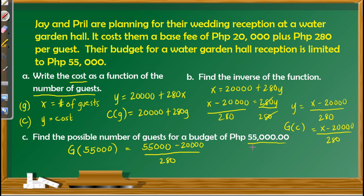Simplifying, we have 35,000 divided by 280, which gives us a value of 125. This means 125 is the maximum number of guests we could have with a budget of $55,000 for the reception.